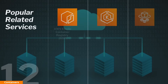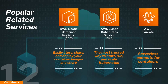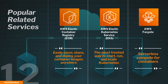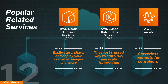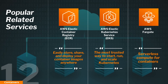Related AWS container services include AWS ECR — Amazon Elastic Container Registry — a fully managed Docker container registry that makes it easy for developers to store, manage, and deploy Docker container images. Another service is Amazon EKS — Elastic Kubernetes Service — which makes it easy to deploy, manage, and scale containerized applications using Kubernetes. And also AWS Fargate, which is similar to EC2 but more serverless — a pay-as-you-go compute engine that lets you focus on building applications without managing servers.